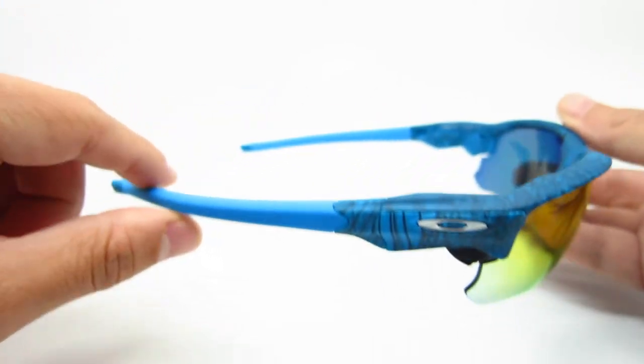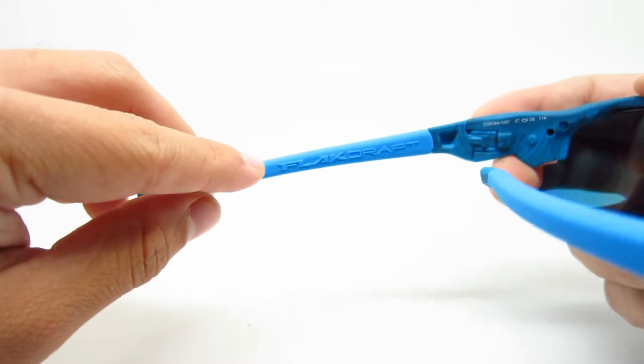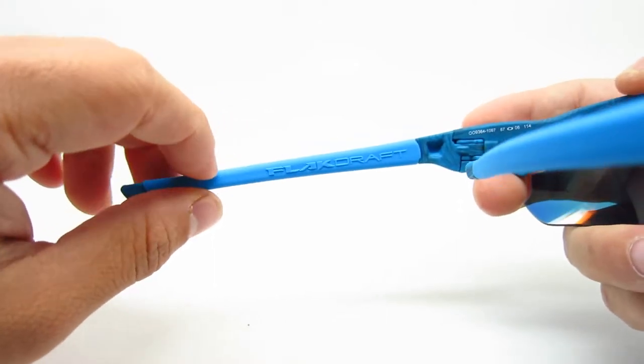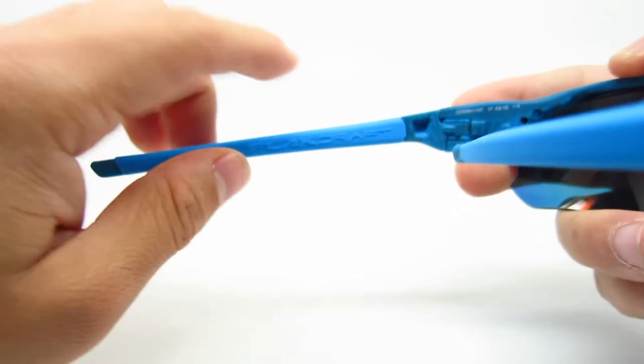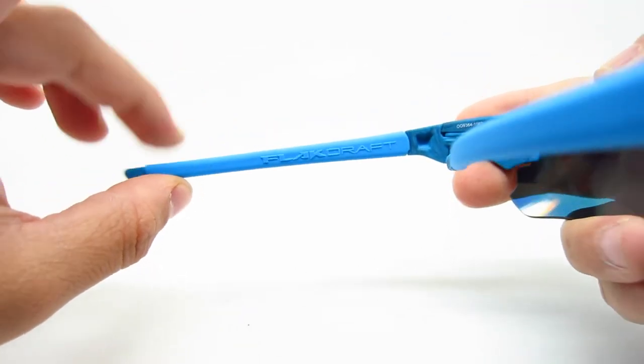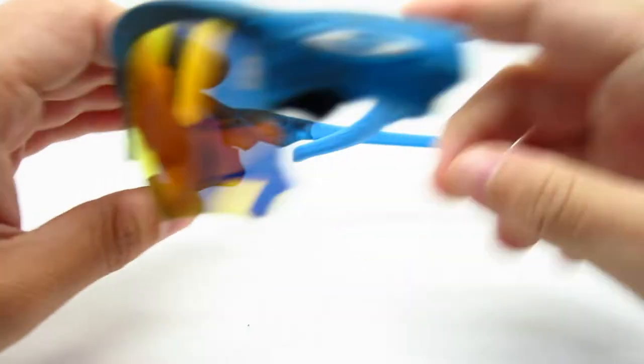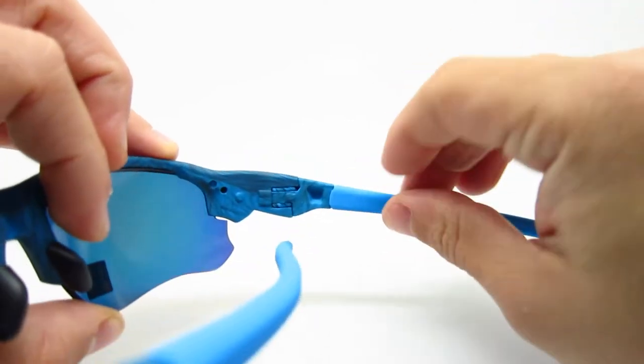The temples do have some rubber grips on them. Very comfortable. Also on the left side you're gonna have the Flak Draft model stamped on here. It's not on the other side, just on the one side. But these do feel very comfortable and it would feel good for long use.